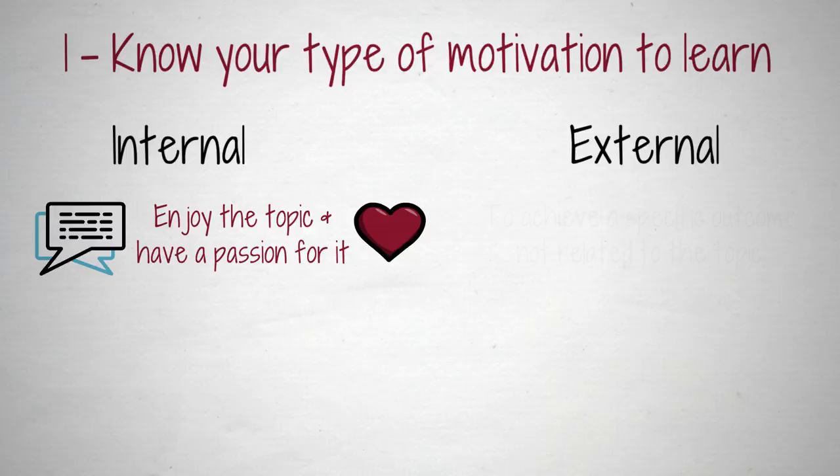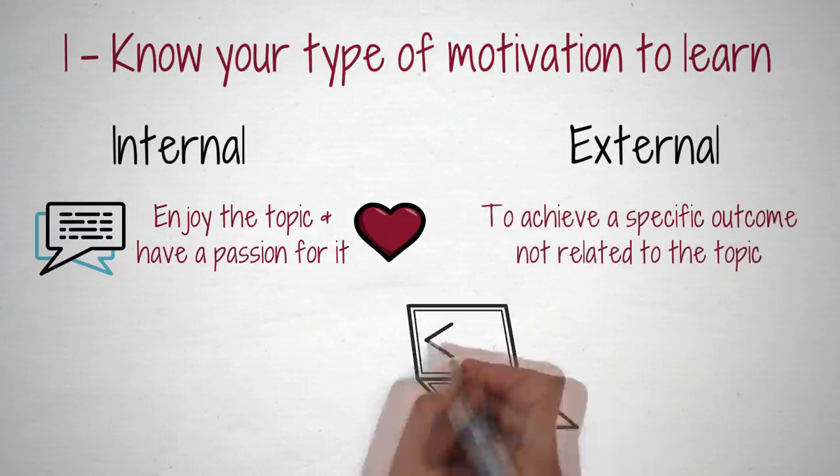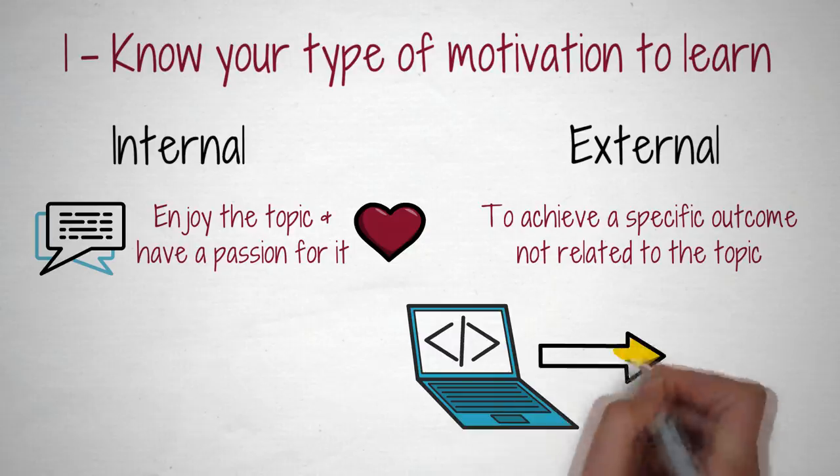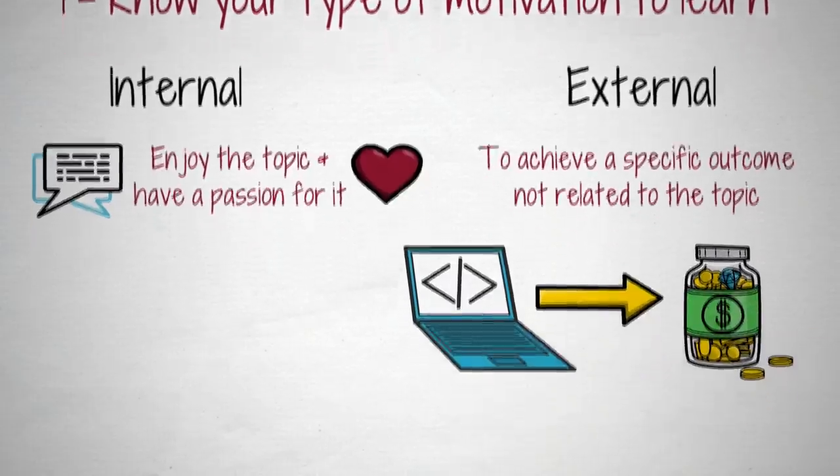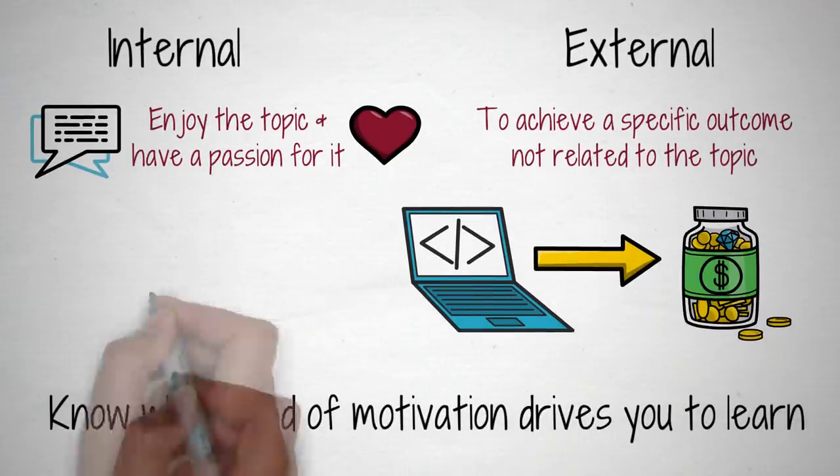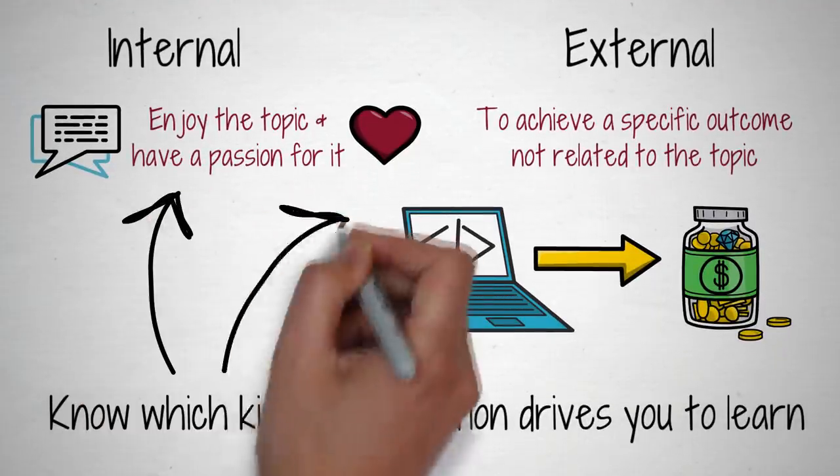External motivation — you learn to achieve a specific outcome not related to the topic you want to learn. For example, you want to learn software, writing, or entrepreneurship to make a lot of money.